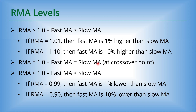When RMA equals 1, the moving averages haven't crossed yet, and sometimes it can be very beneficial to search for stocks where the two moving averages are together on the chart and haven't yet broken to the upside or downside, but may be ready to do so. When the RMA is less than 1, the fast moving average is less than the slow moving average.